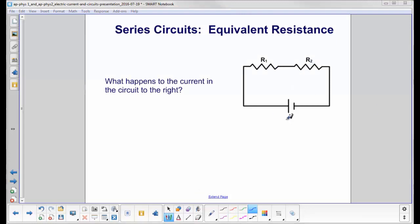So here we have our two resistors, and we know we have current coming out of the positive end of the terminal. What happens to the current in this circuit? We're looking for the magnitude of the current as it goes through these resistors.